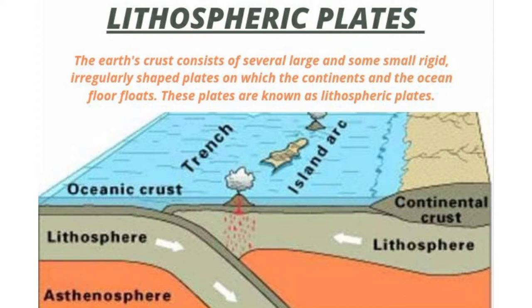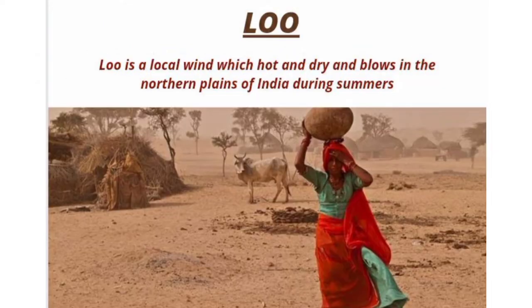Loo. Loo is a local wind which is hot and dry and blows in the northern plains of India during summers.